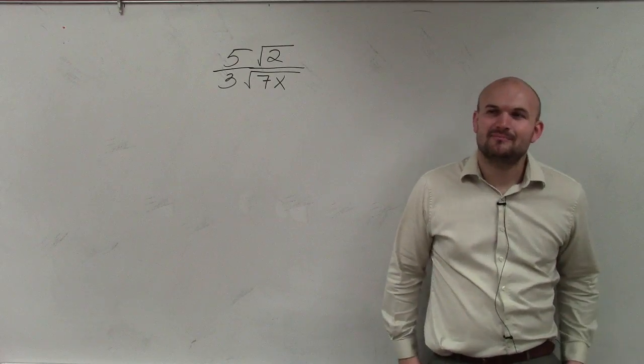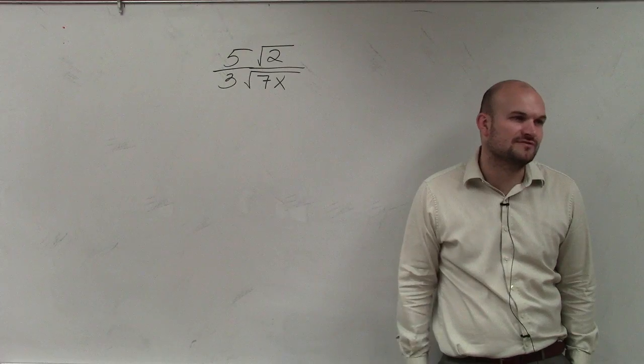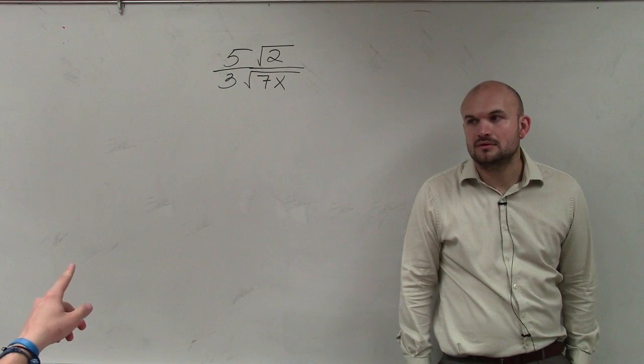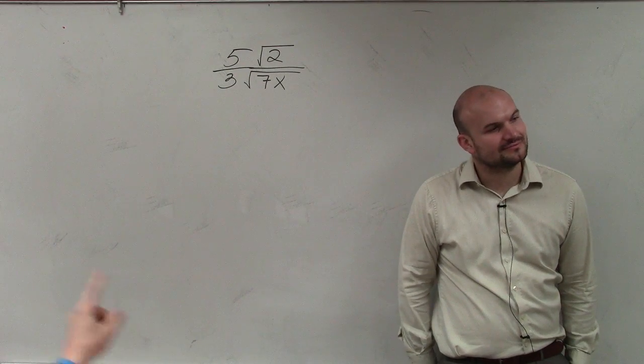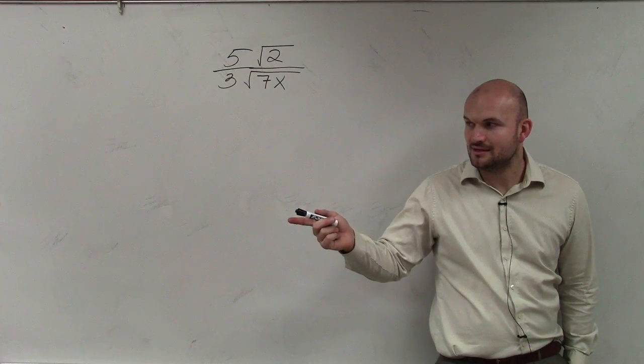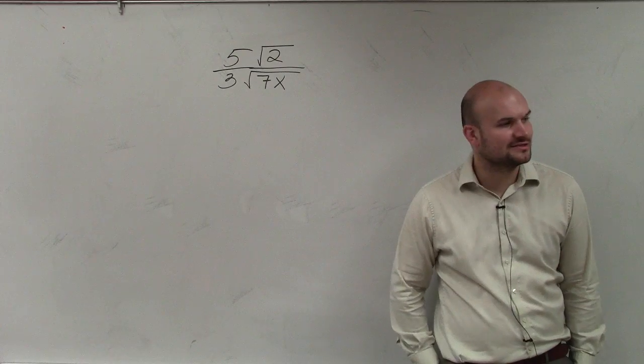But what can I take the square root that includes a 7? Kind of an odd question. But how could I, if I can't take the square root of 7, what can I take the square root of? 7 times? Can't you multiply it by 3 times the radical of 7x? 7 times what can I take the square root of?